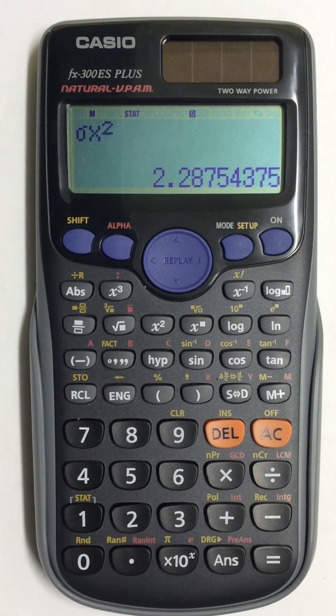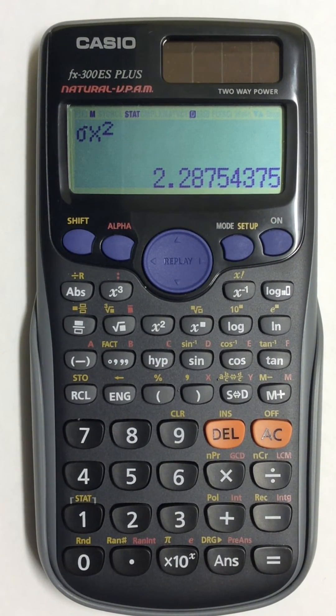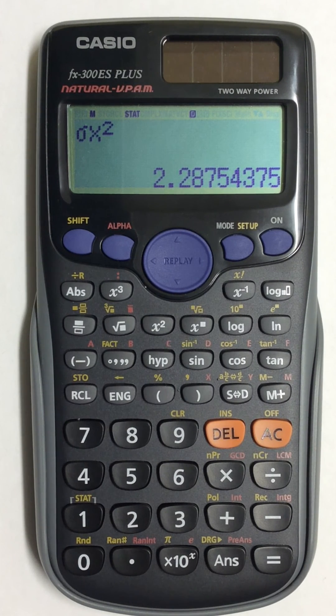So this is how to find population standard deviation and sample standard deviation as well as variance for both in your scientific calculator.